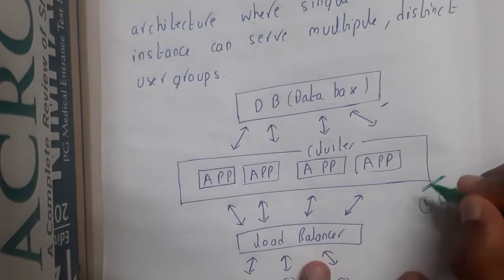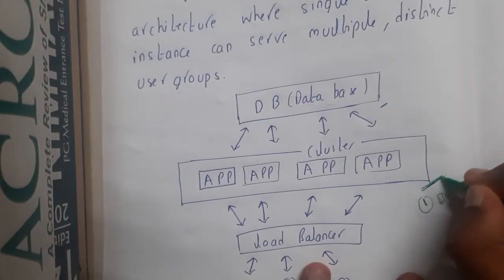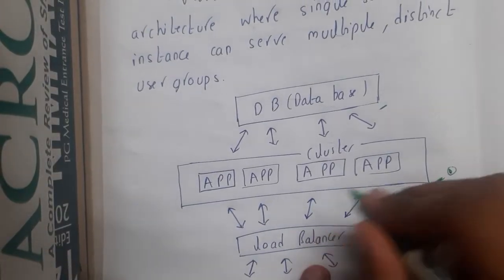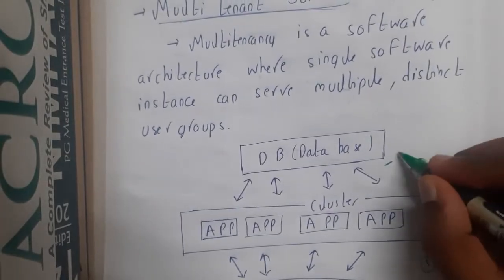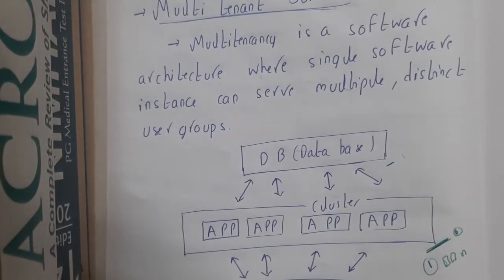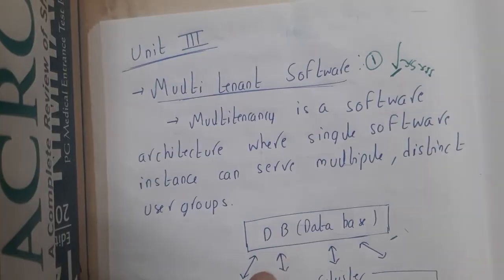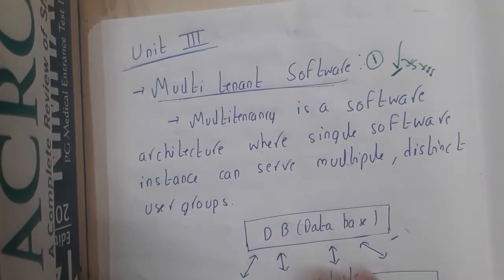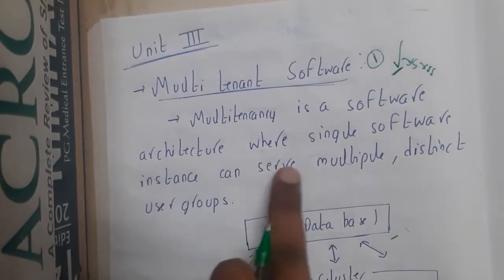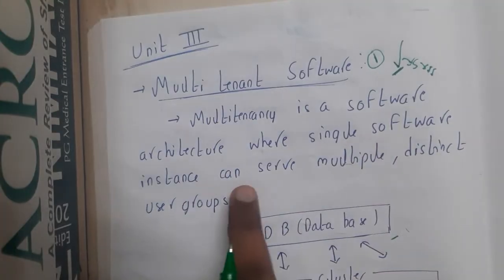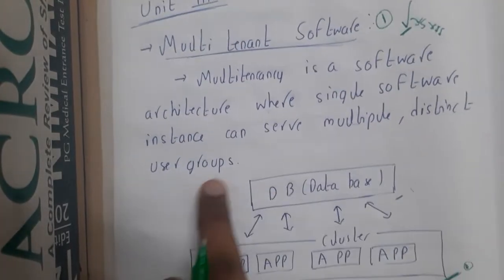The main thing that you should understand here is they are having a single cluster of applications and only a single common database. Remember, I am saying this because when you compare this with single tenant you will understand. Multi-tenant is a software architecture where a single software instance can serve multiple distinct user groups.